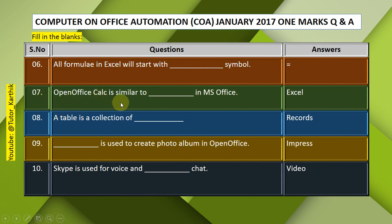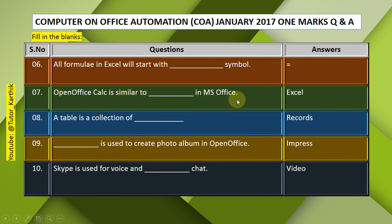Question 7: OpenOffice Calc is similar to — in MS Office. Answer: Excel. OpenOffice Calc is similar to Excel in MS Office. Question 8: A table is a collection of —. Answer: Records. A table is a collection of records.